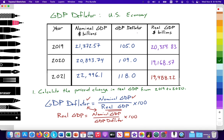The GDP deflator is measuring the change in prices or inflation compared to a base year — the base year is 100. Real GDP is what we calculated in the previous video. Real GDP fell from 20,354.83 billion to 19,168.57 billion due to the pandemic, and then began to recover. The GDP deflator formula is nominal over real times 100. Since we were given nominal and deflator data, we rearrange: real GDP equals nominal divided by the deflator times 100.